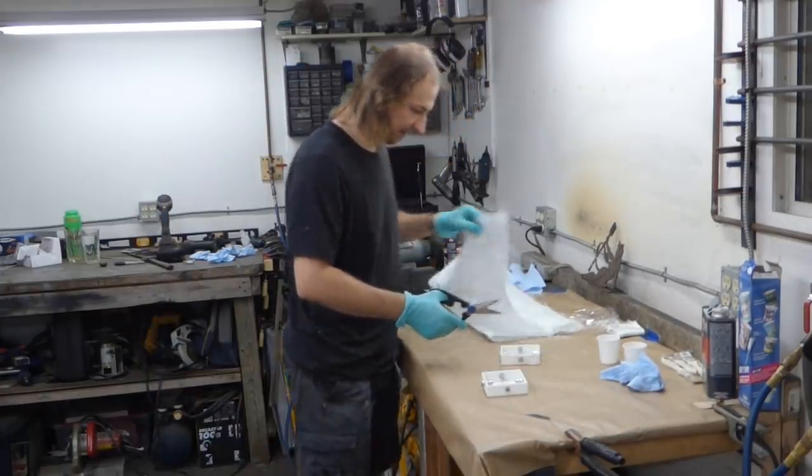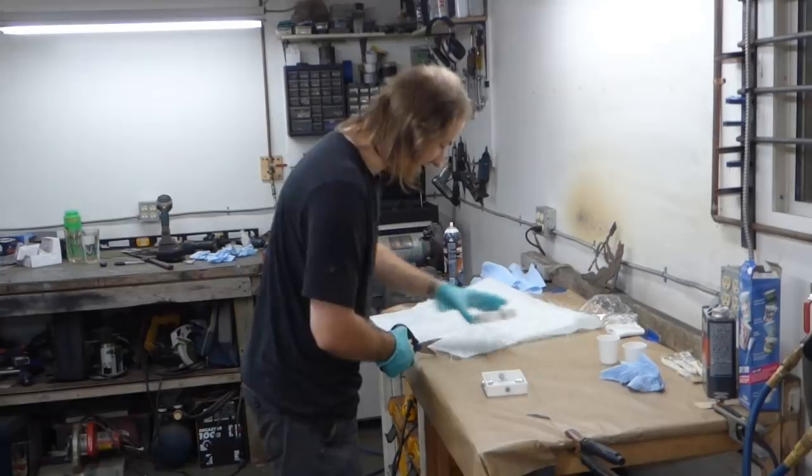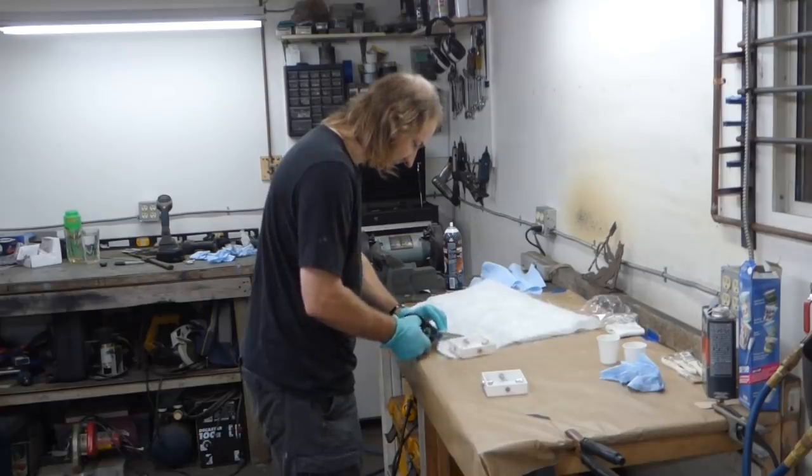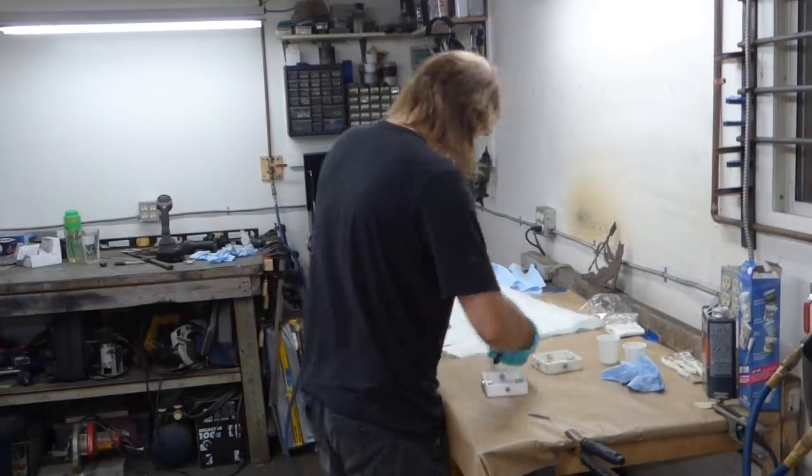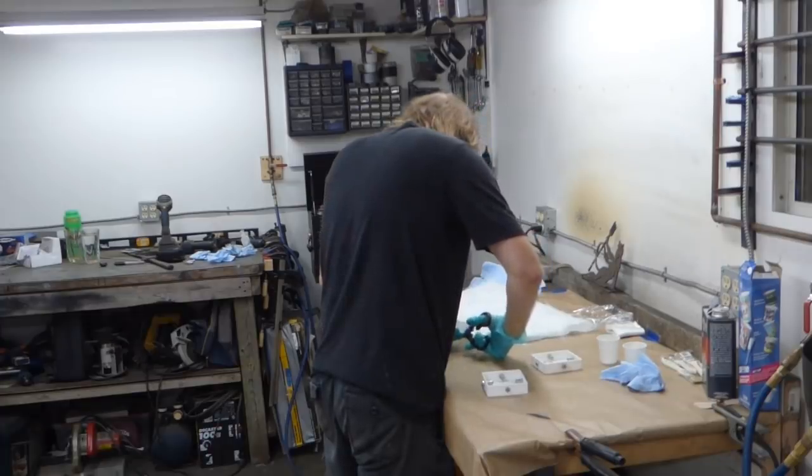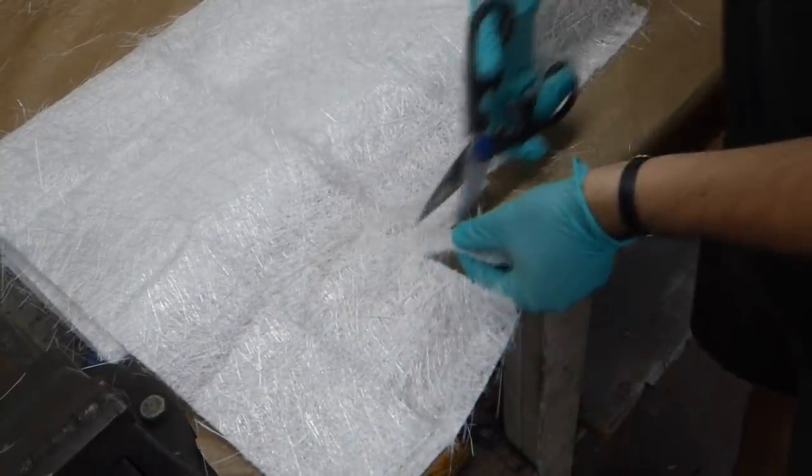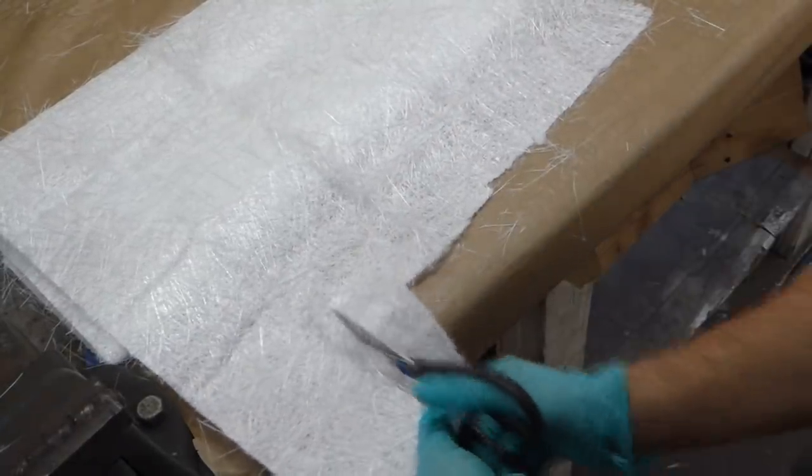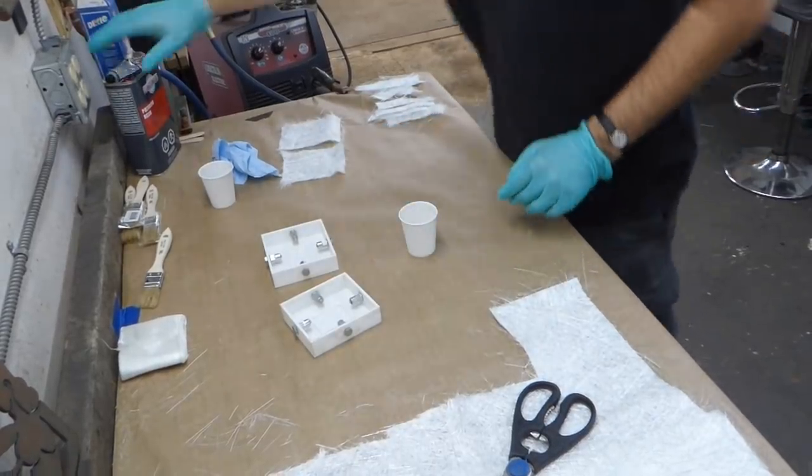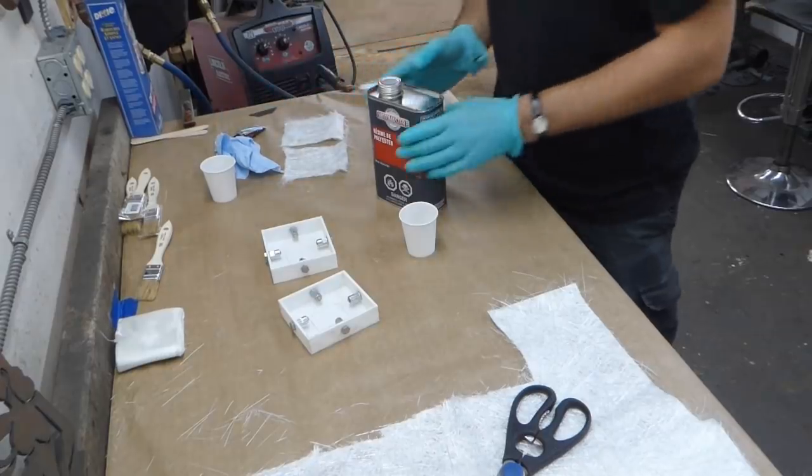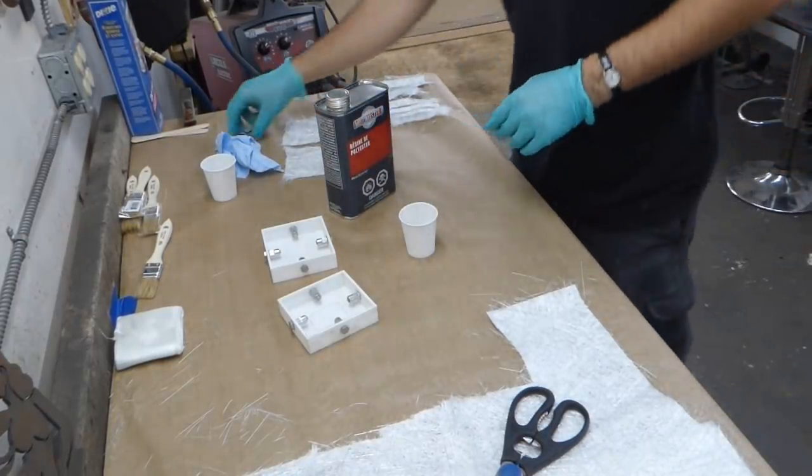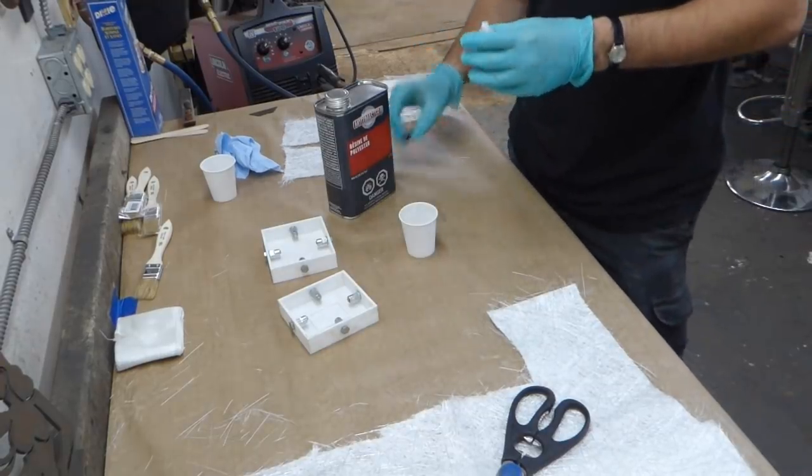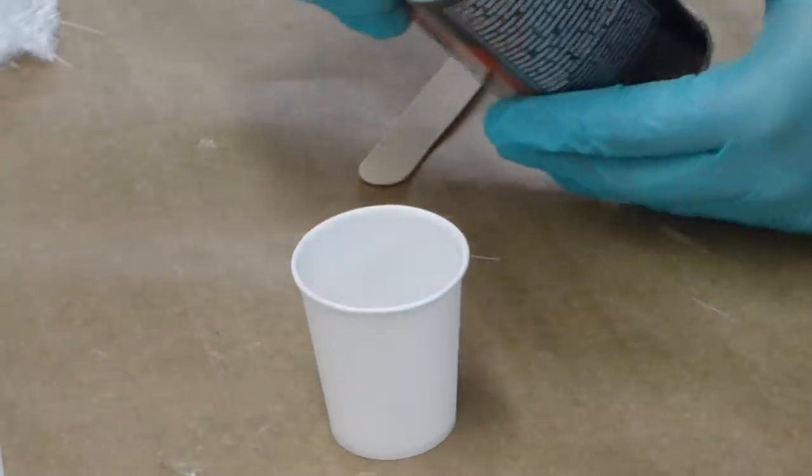The first step is to cut a few pieces to roughly the size of the area I need to fill. Now once I start mixing things, the instructions say I have about 12 minutes to work with the resin, so I won't have a lot of time to be messing with the camera. Each one of these cups is three fluid ounces. According to the instructions, it is 10 drops of hardener.